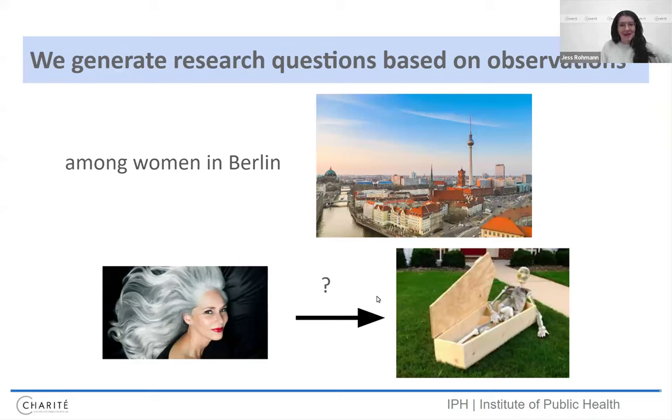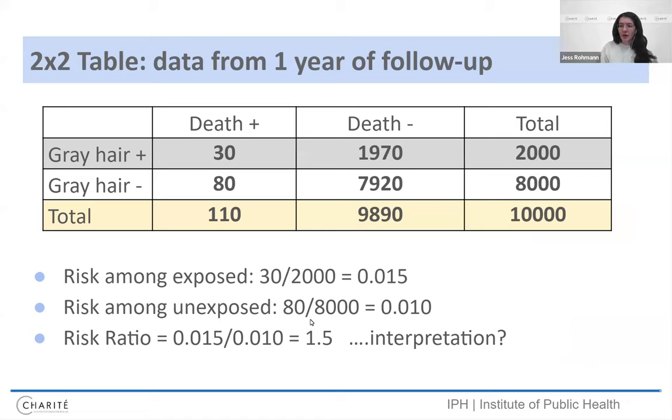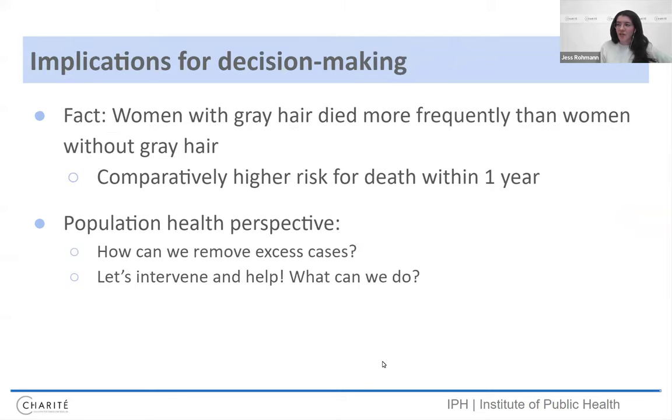So what is the cause? I'm an epidemiologist, as I mentioned, and in public health, we're trained to observe and count and compare. So let's say that we notice among women in Berlin, those with gray hair die more often than those without gray hair. Okay, so that's something we observe. I think everyone would agree with me. That's not so surprising that we observe that. So we can do our counting and comparing our good epidemiologist two by two table. We can calculate the risk of dying within one year among the exposed and among the unexposed. We can compute our risk ratio, which shows that 1.5. So the risk is higher among those with gray hair of dying. They're dying more frequently. And that's a fact. It's true.